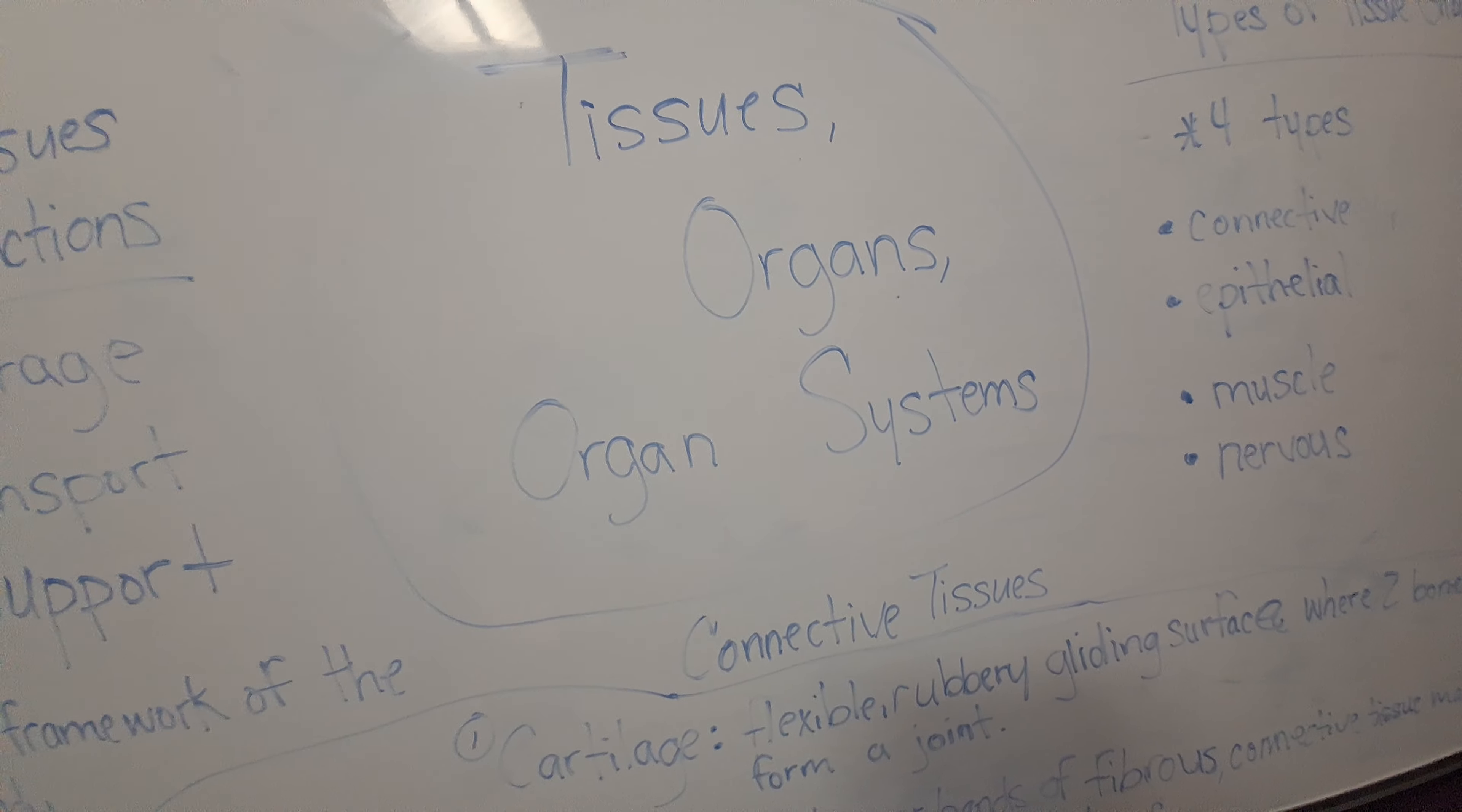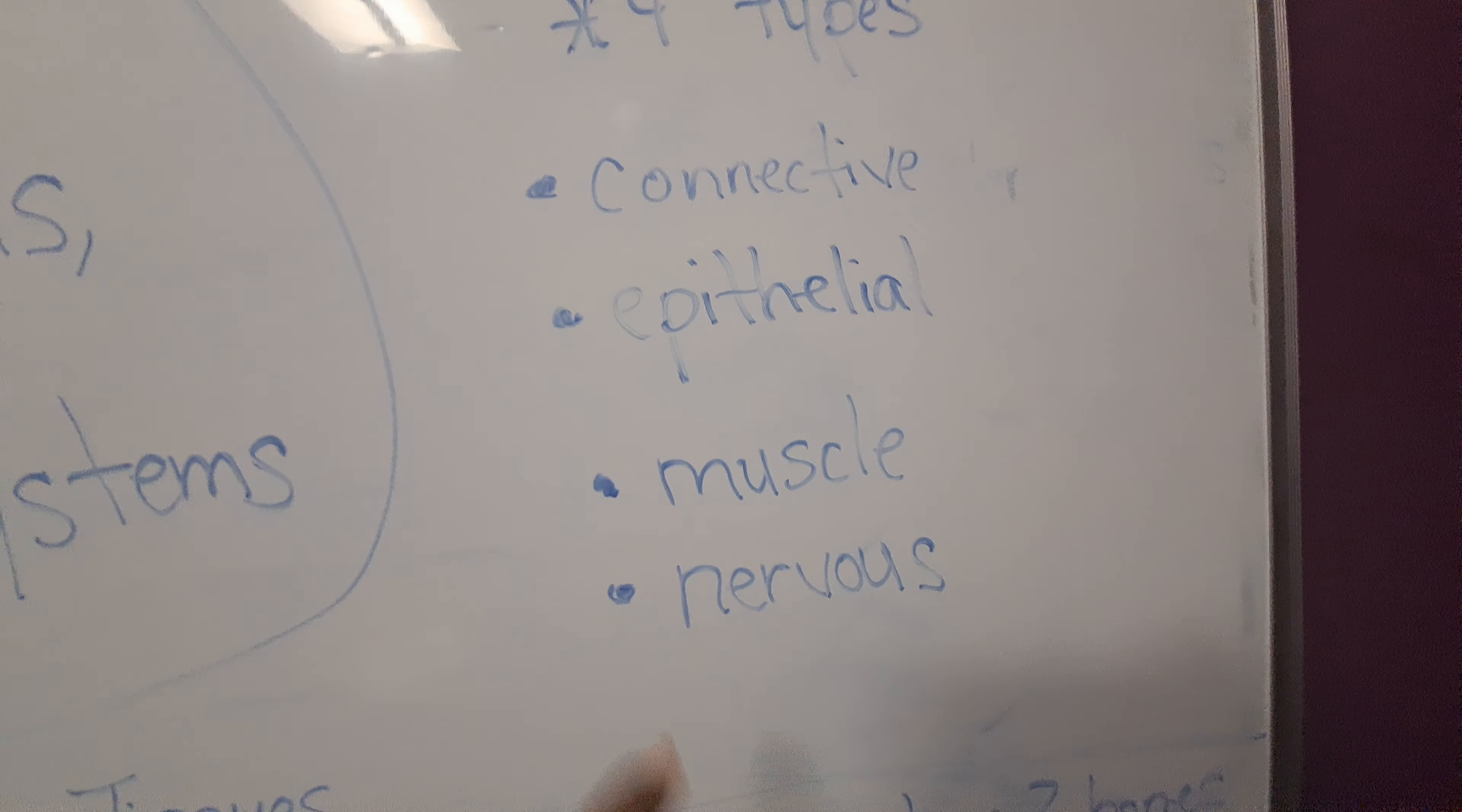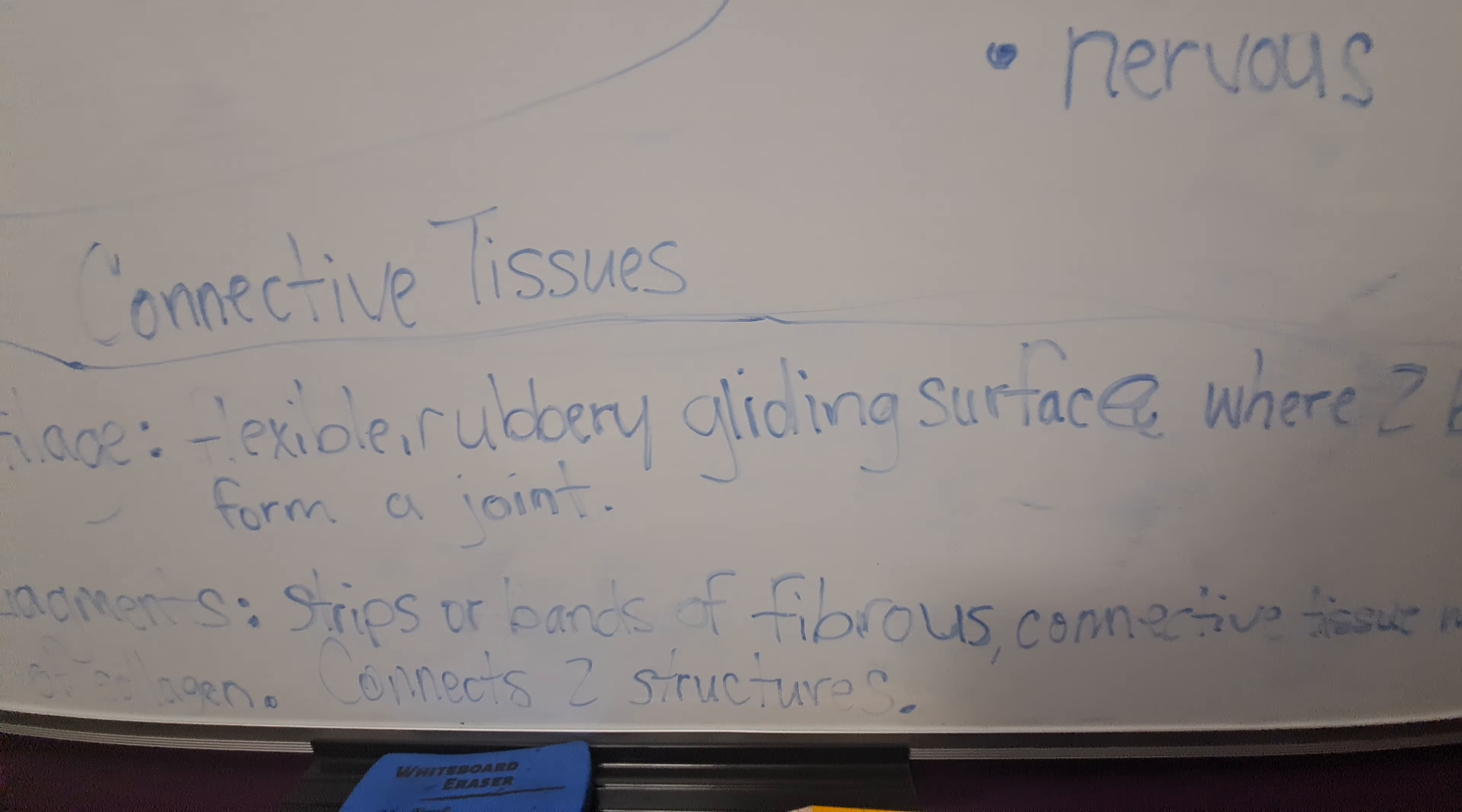This is the last part before I have to leave, going over tissues, organs and organ systems. The functions of tissues are storage, transport and they support the framework of the body. There are four types of tissue groups: connective, epithelial, muscle and nervous. Now we're going to get into the connective tissues. Cartilage is a flexible, rubbery gliding surface where two bones form a joint.